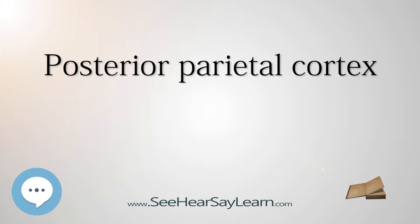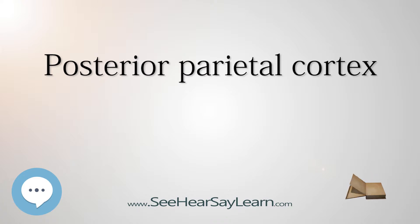The posterior parietal cortex has been understood to have separate representations for different motor effectors, e.g. arm vs. eye. In addition to separation based on effector type, some regions are activated during both decision and execution, while other regions are only active during execution.